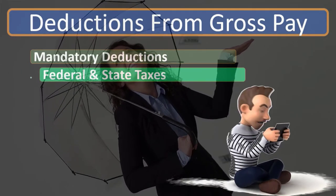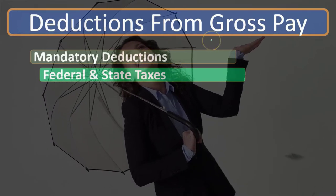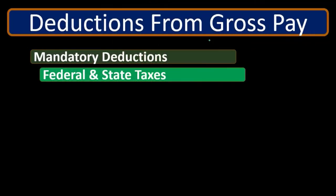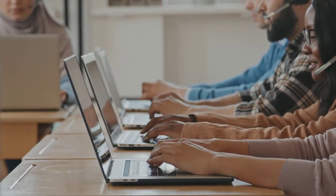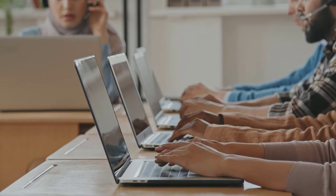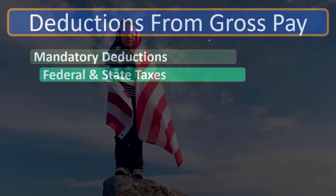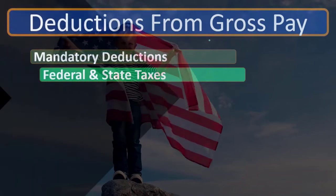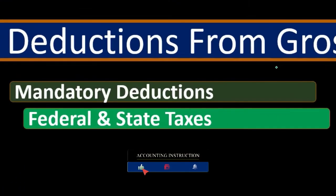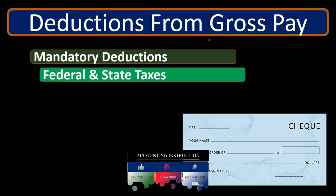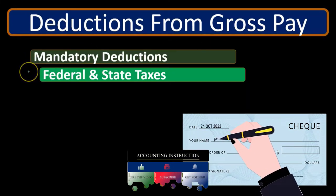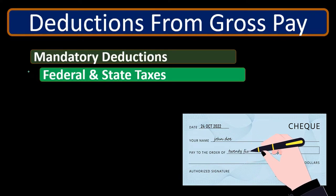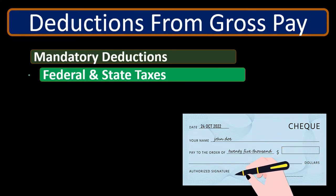It's important to note that the federal income taxes coming out of gross pay are the responsibility of the employee — they're the employee's taxes. The employer is required to take them out by law, but these taxes are related to the employee. The employer is the one that actually writes the check, but the money is coming out of the employee's paycheck. We're taking this money out of the employee's paycheck by law, and then paying it to the state or the federal government on behalf of the employee.